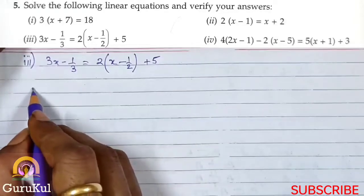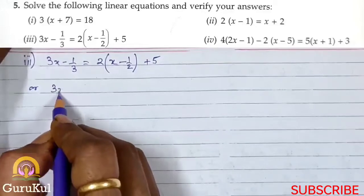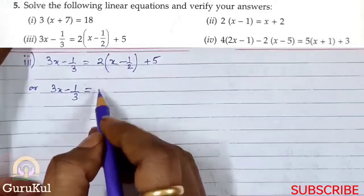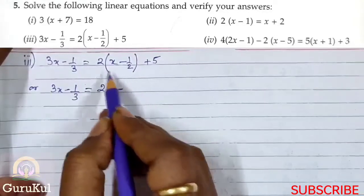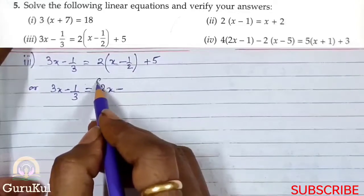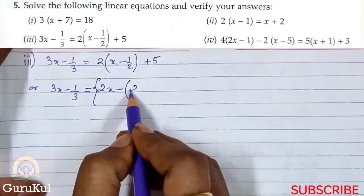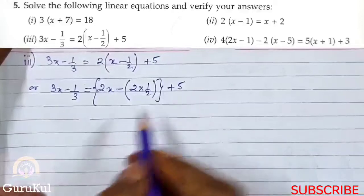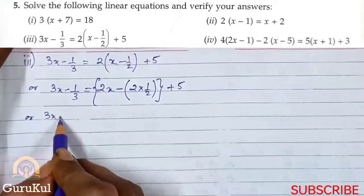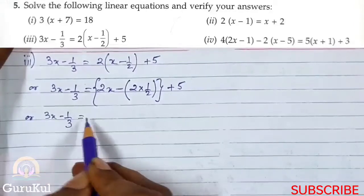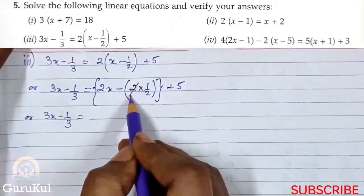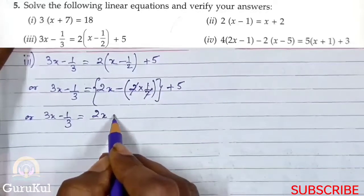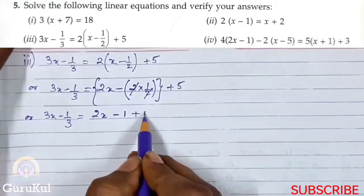Now let us solve this. Here, 3x minus 1 by 3 is equal to — when we open the bracket — 2 into x is 2x, minus 2 into one-half. Now notice: 2 and 2 get cancelled, leaving 1. So we get 2x minus 1 plus 5.